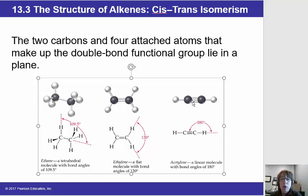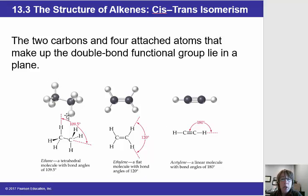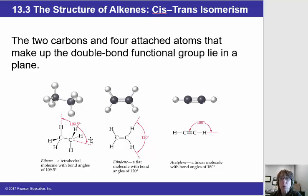Alkenes and alkynes have restricted rotation, as we'll see on the next slide, because of their double bonds. For now, let's focus on bond angles. Carbons with four bonds have those bonds as far apart as possible based on VSEPR theory, giving bond angles of 109.5°.